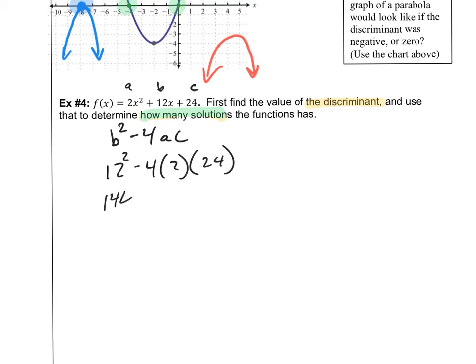Well, 12 squared is 144, minus 4 times 2 is 8. And what's 8 times 24? I just plugged in my calculator, it's 192. So 144 minus 192 equals negative 48. And it's important, a lot of students make a mistake here with this minus sign. Remember, that's going to be minus that whole time.